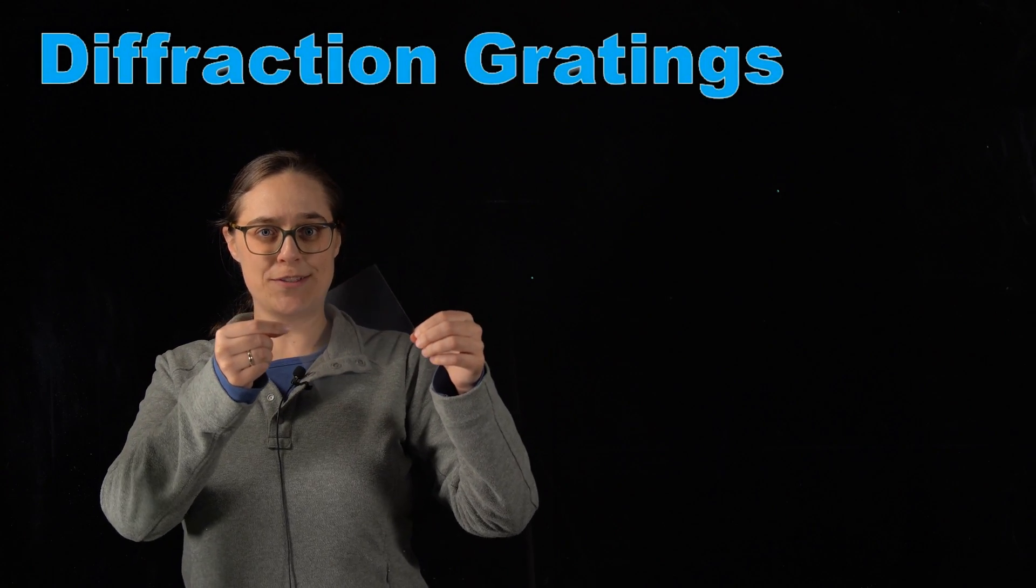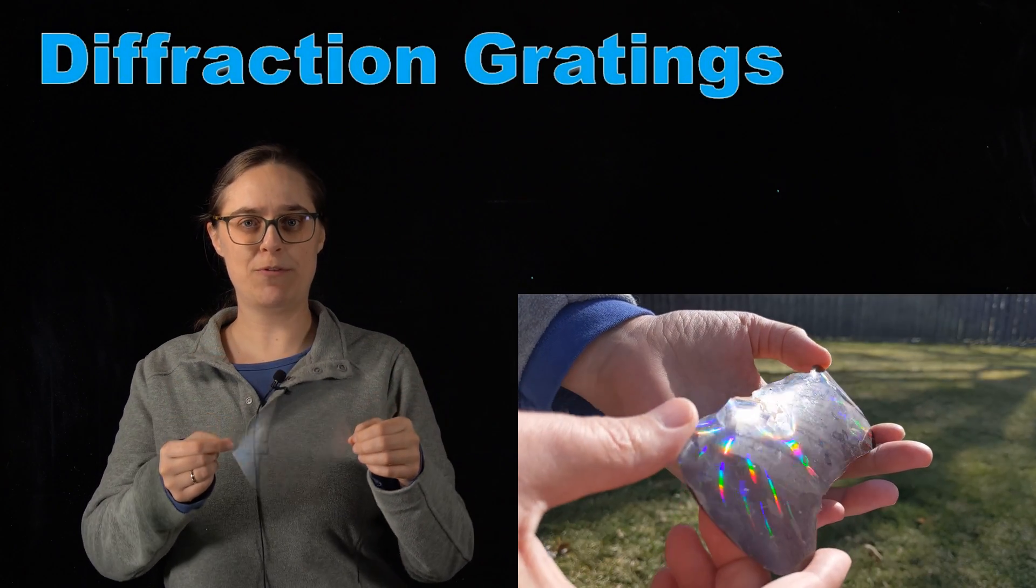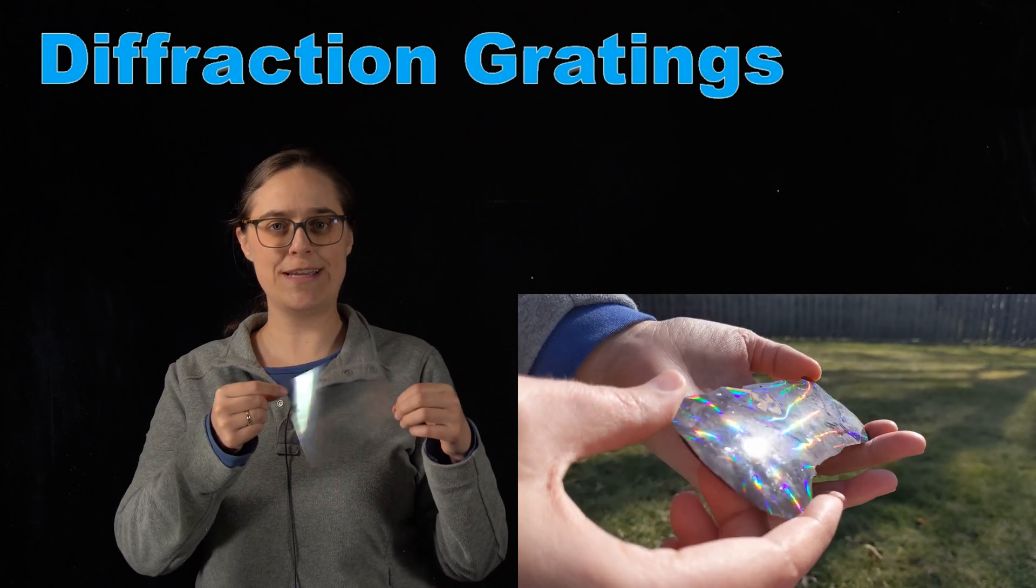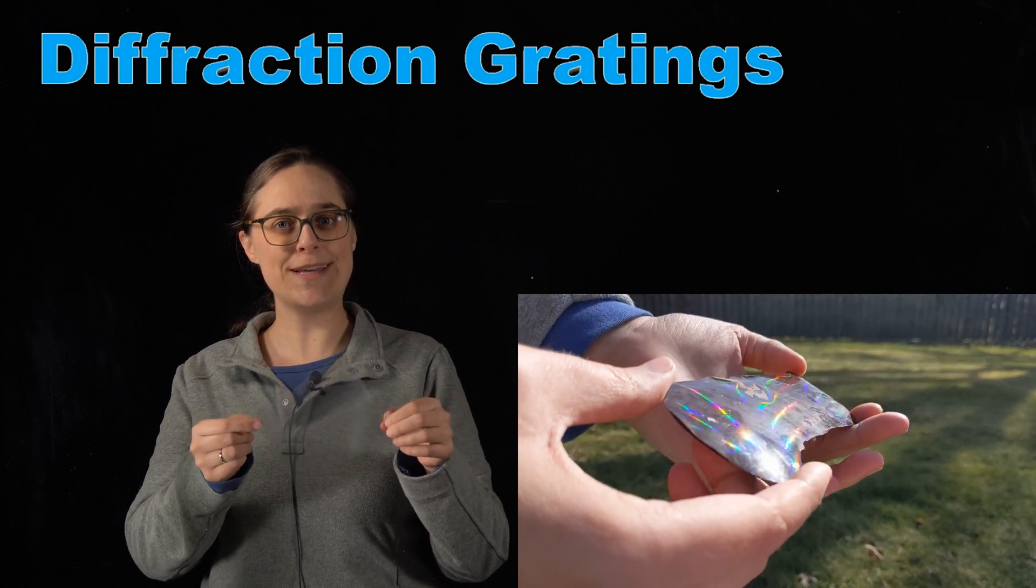I'm going to be explaining what diffraction gratings are and how they work, and I'm going to be performing an at-home lab experiment where I melt chocolate over a diffraction grating and get the chocolate to reflect white light as a rainbow.